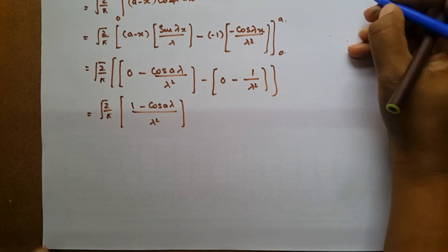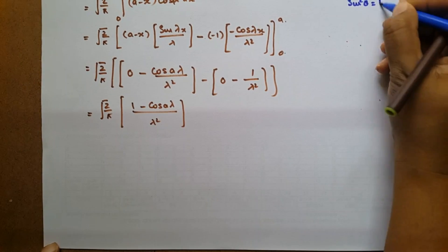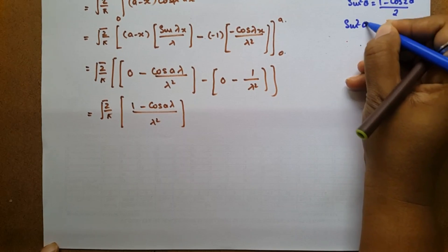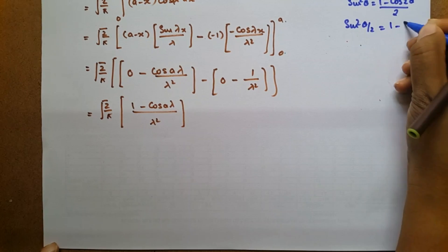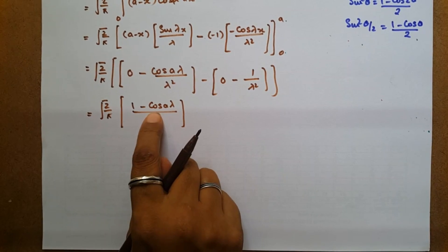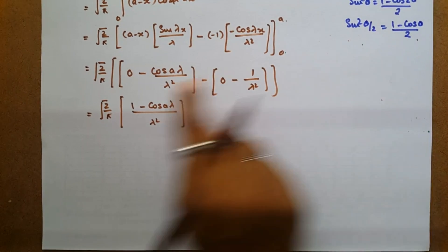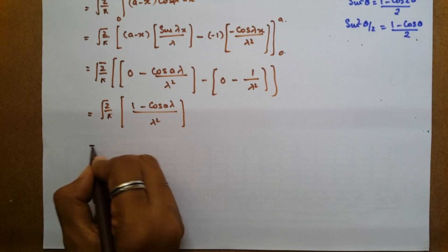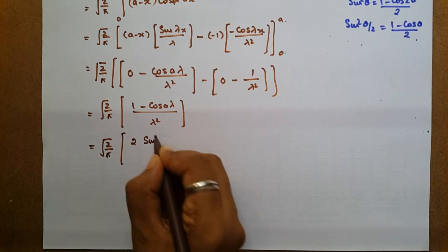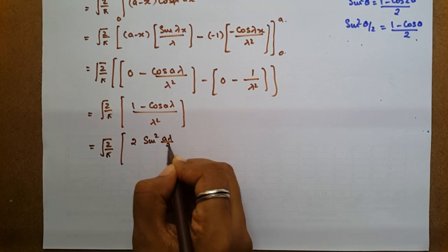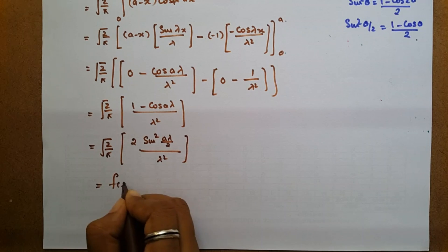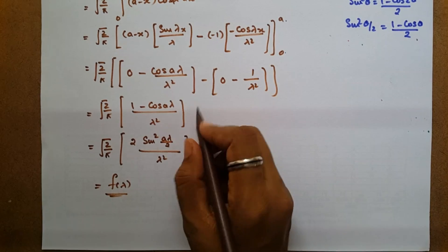Using the identity 1 - cos θ = 2 sin²(θ/2), we get 1 - cos(aλ) = 2 sin²(aλ/2). Therefore F(λ) = root(2/π) times 2 sin²(aλ/2) by λ². This is F(λ).